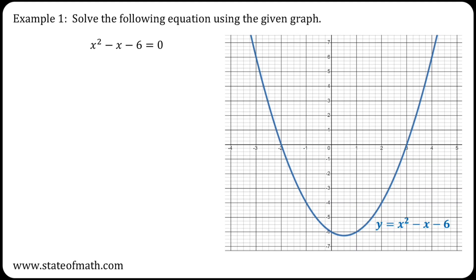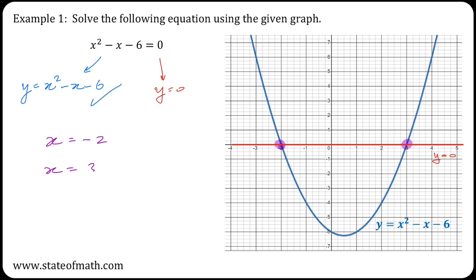In example one, I'm given the graph of y equals x squared minus x minus 6, and I'm asked to solve the equation x squared minus x minus 6 equals 0. So y equals the left-hand side, which is y equals x squared minus x minus 6, and y equals the right-hand side, which is y equals 0. The left-hand side is already plotted, so all I have to do is plot the right-hand side, which looks like this, and the graphs intersect at minus 2 and at 3. Hence, the solutions are x equals minus 2 and x equals 3.